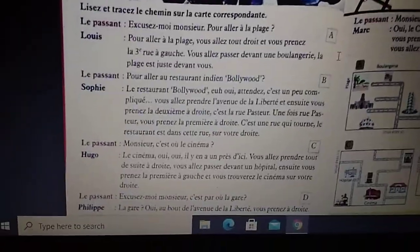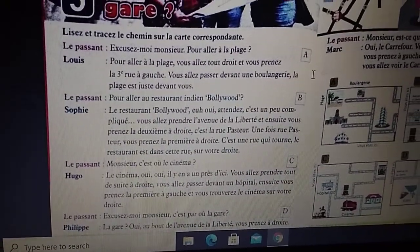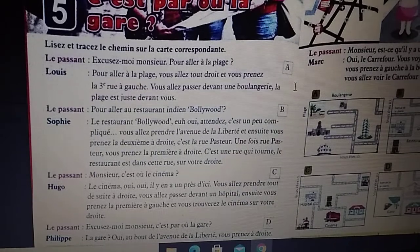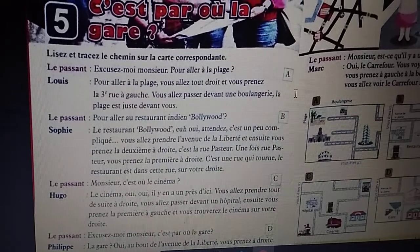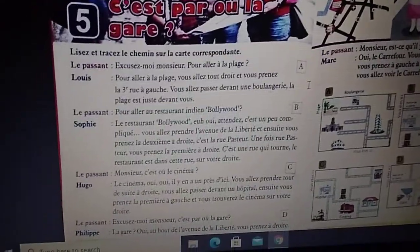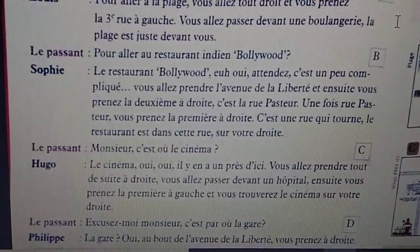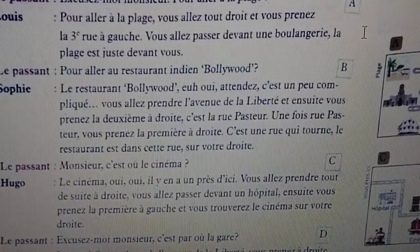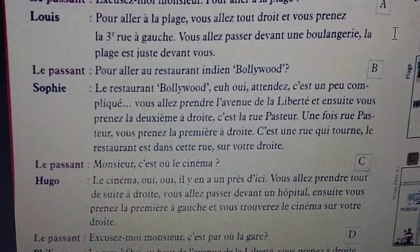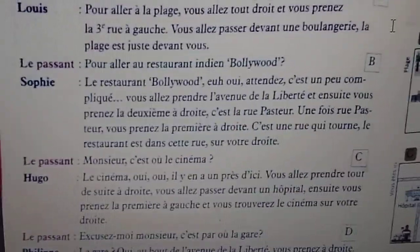Third dialogue. Monsieur, c'est où le cinéma? Hugo: le cinéma, oui oui, il y en a un près d'ici. Vous allez tout droit, puis tout de suite à droite. Vous allez passer devant un hôpital. Ensuite vous prenez la première à gauche et vous trouverez le cinéma sur votre droite.